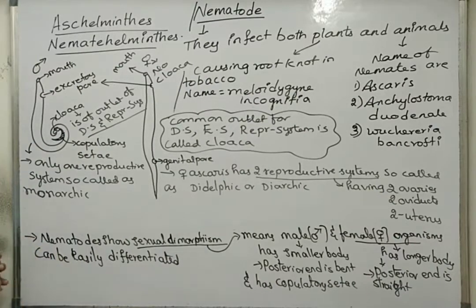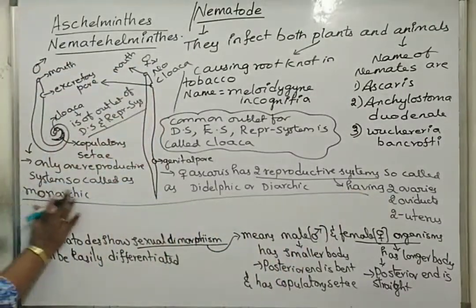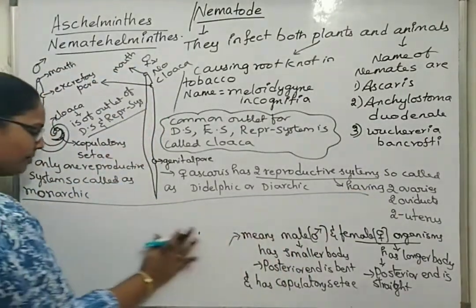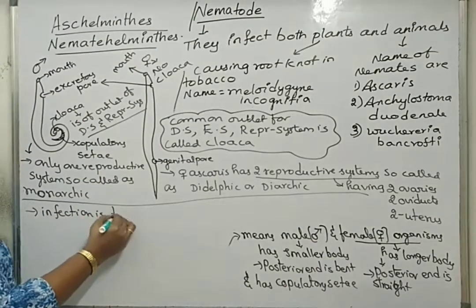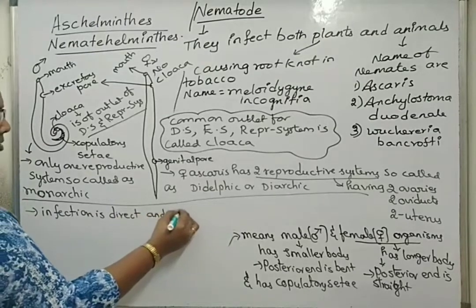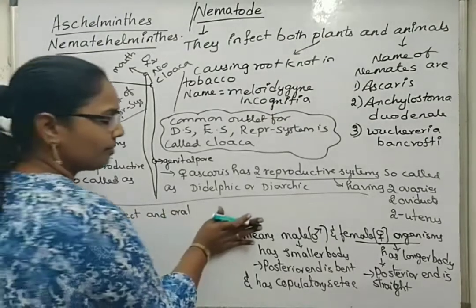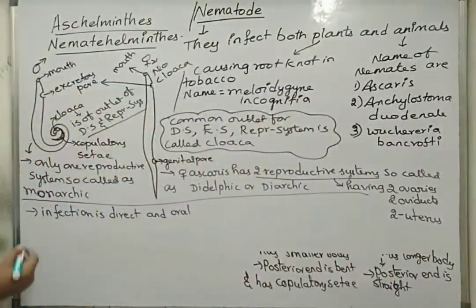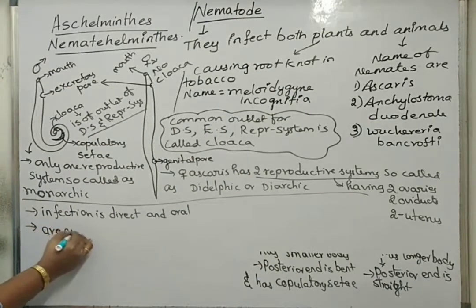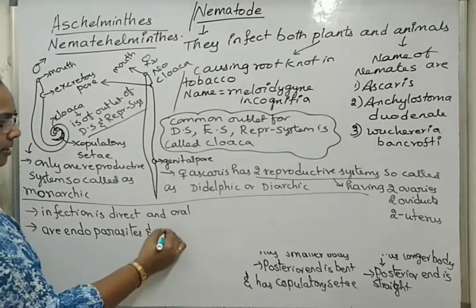Infection is direct and oral, meaning it occurs through the mouth, in both male and female Ascaris. These organisms are endoparasites and anaerobic in nature.